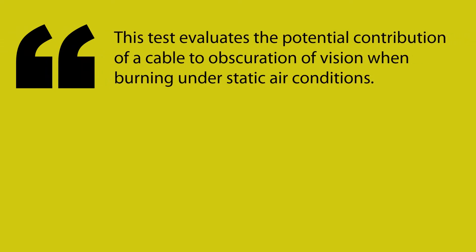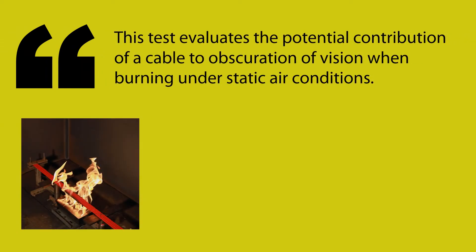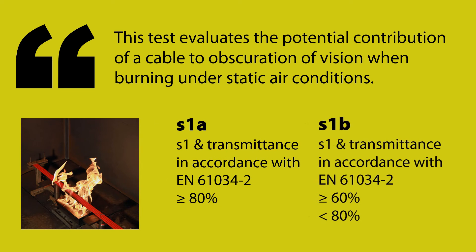To clear up any confusion: if you pass S1, you can then opt to add an additional test to establish what is termed transmittance. This test is not new to us and we've been using it for a number of years to qualify an LSOH cable. It is related to smoke opacity or density — effectively the amount of light that can be measured through the smoke produced. More than 80 percent is classified as S1a, between 60 and 80 percent it is S1b, and below 60 percent it is a fail, which could actually impact upon the claimed S1 rating.